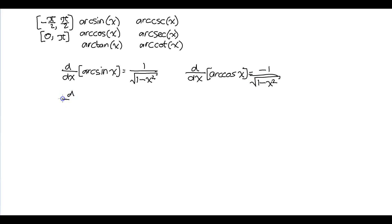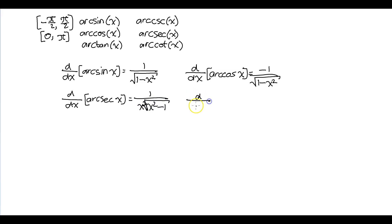If we take the derivative of arc secant of x, we get — sorry, not x squared — it's 1 over x times the square root of x squared minus 1. And the derivative of arc cosecant of x equals negative 1 over x times the square root of x squared minus 1.